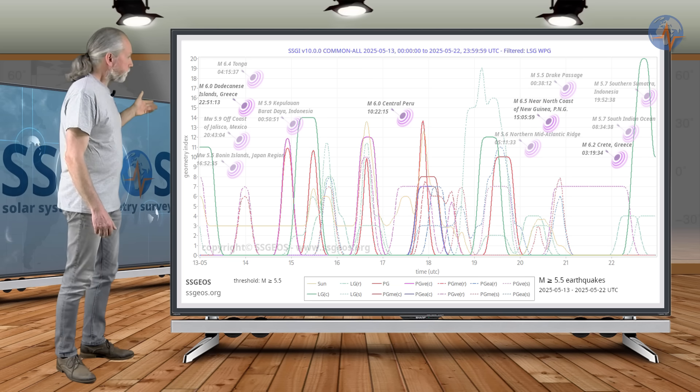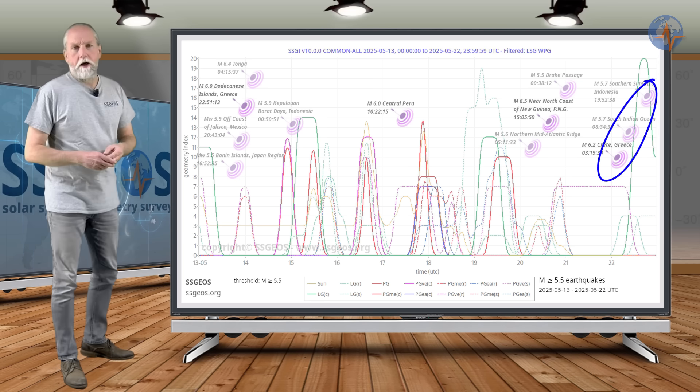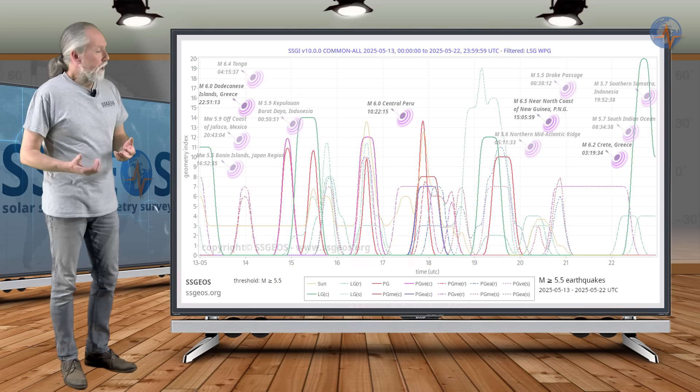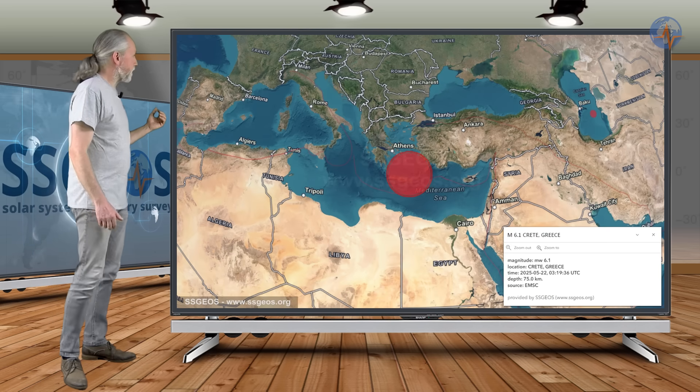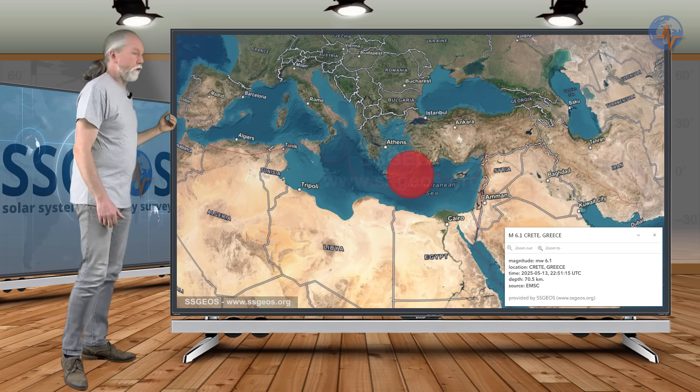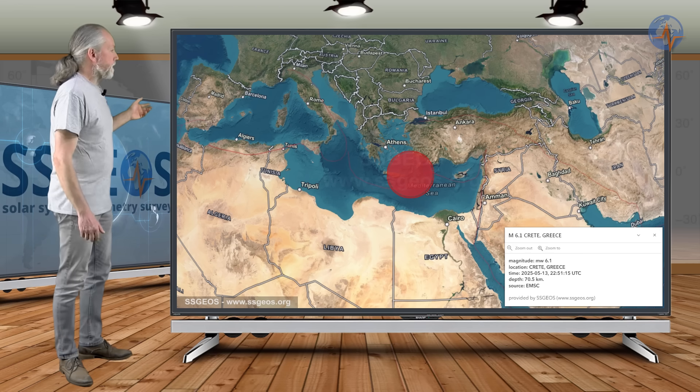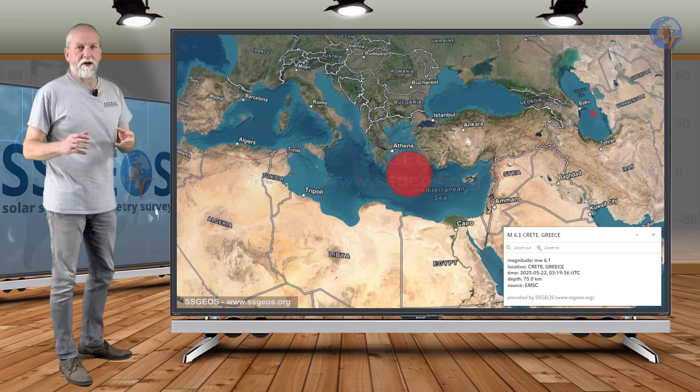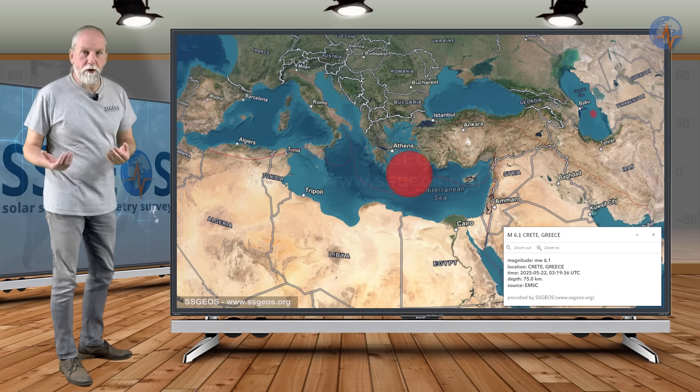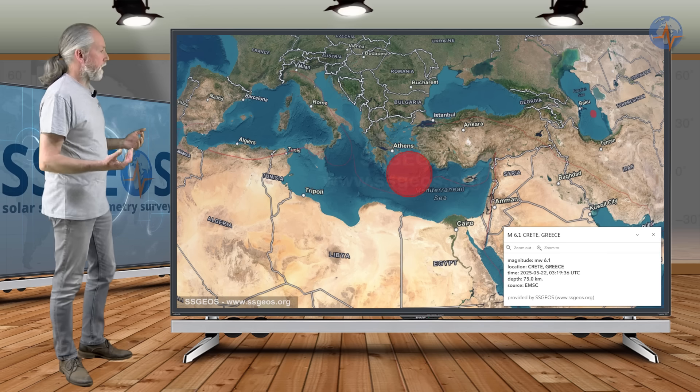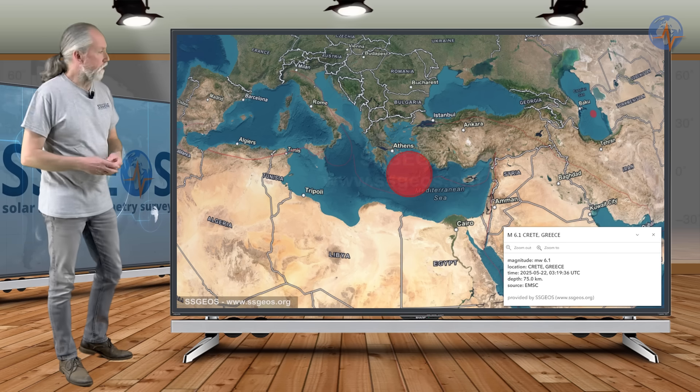And we also had some clustering on the 22nd peaking magnitude 6.2 at Crete, Greece. And this is the second strong earthquake actually. It also happened earlier on the 13th. It was also around 6.0, 6.1. And so there is some stress there that's being released and there's stress redistribution there in the area. And this could be indicators of upcoming larger seismic activity in the region.